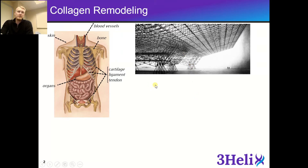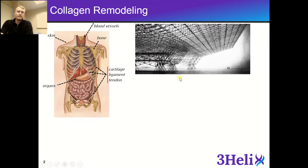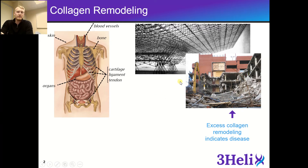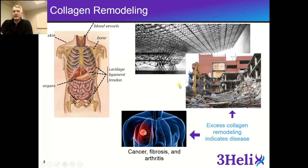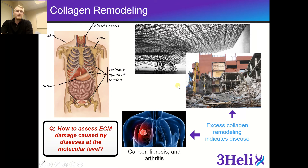In natural tissue homeostasis, ECM remodeling and collagen synthesis and degradation is very tightly controlled. But excessive collagen remodeling is often an indicator of diseases, such as cancer, fibrosis, and arthritis. This begs the question: if there's a lot of excess collagen in these disease states, how can we assess the ECM damage caused by diseases at the molecular level?